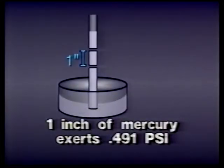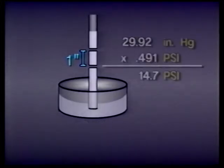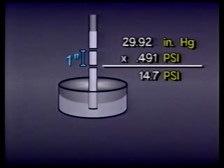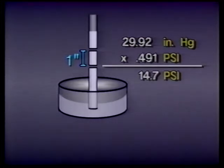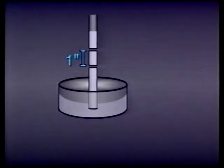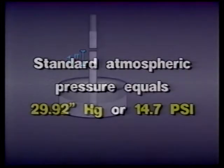One inch of mercury exerts a pressure of about one-half pound per square inch. Therefore, 30 inches of mercury exerts a pressure of about 15 pounds per square inch — that's the approximate pressure exerted by the atmosphere at sea level.